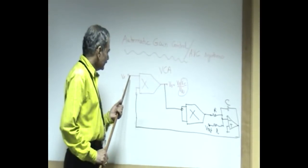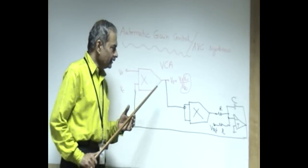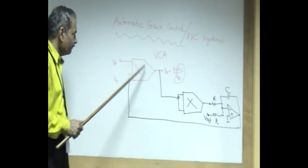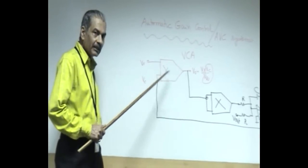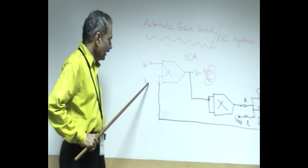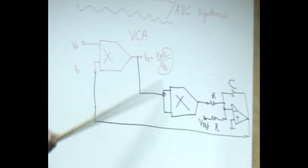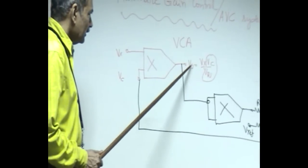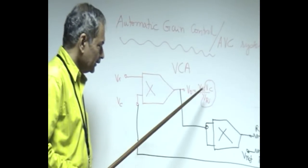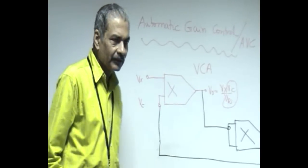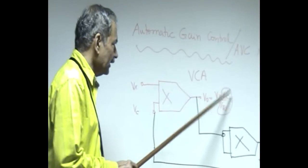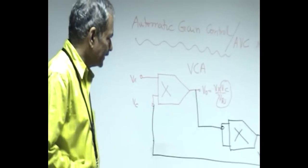Let us now establish a voltage control amplifier. The voltage control amplifier is nothing but a multiplier. An ideal multiplier is being used: V_x into V_y divided by V_r, where V_r is the constant of proportionality of the multiplier. Such precision multipliers with standardized value of V_r of about 10 volts exist, which can handle signals of the order of plus minus 10 volts.